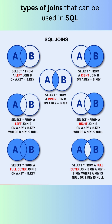We see a diagram showing the different types of joins that can be used in SQL. A join is a SQL statement that combines data from two or more tables. The different types of joins are: an inner join, which is the most common type of join. It returns all rows from the left table that have matching rows in the right table.